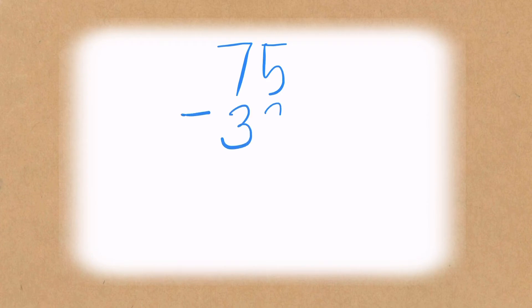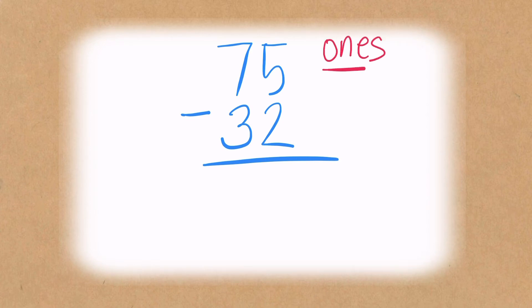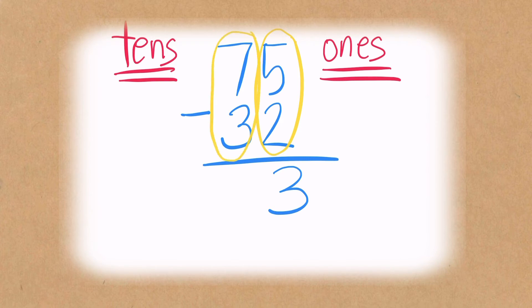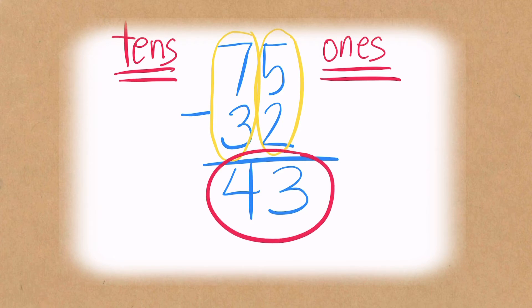Now let's look at the next example: we have 75 minus 32. Again, we solve for the ones place first, and that is five minus two. Five minus two is equal to three. Now let's go to the tens place: seven minus three is equal to four. The final answer is 43.